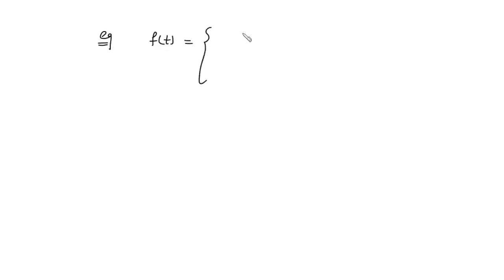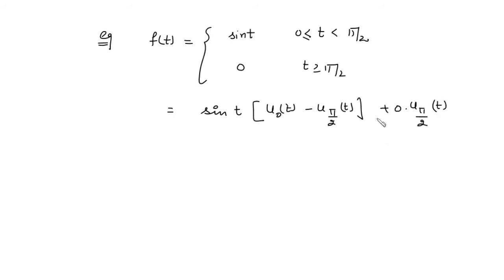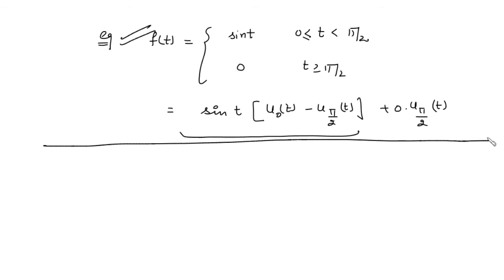Now let's look at an example. Suppose we have a function that is sin(t) when t is between 0 and π/2, and 0 after π/2. We can write this as sin(t)·[u(t-0) - u(t - π/2)] + 0·u(t - π/2). So we can express any piecewise continuous function in terms of the unit step function.